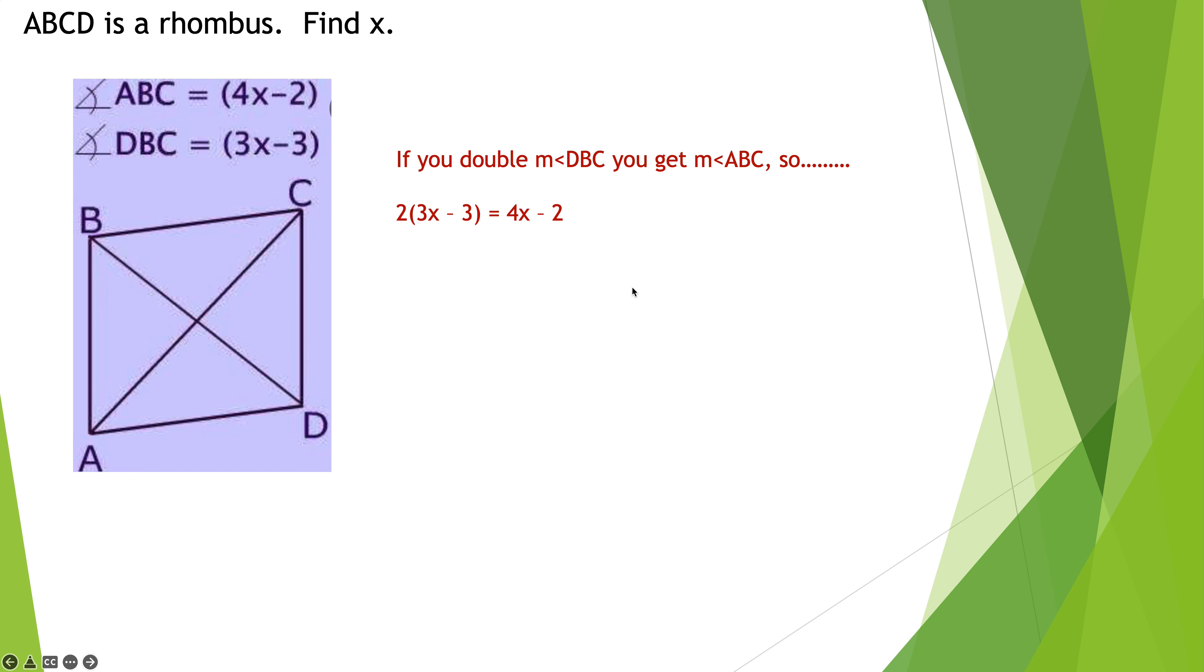If I double angle DBC, the measure, which is 3X minus 3, I'm going to get the measure of angle ABC, which is 4X minus 2. Distributing the 2, I get 6X minus 6 is 4X minus 2. Opposite side, opposite operation. Addition, 2X minus 6 is negative 2, adding the 6. 2X is equal to 4, dividing by 2, and X is equal to 2. Okay. All right. That's all they wanted. We are done.